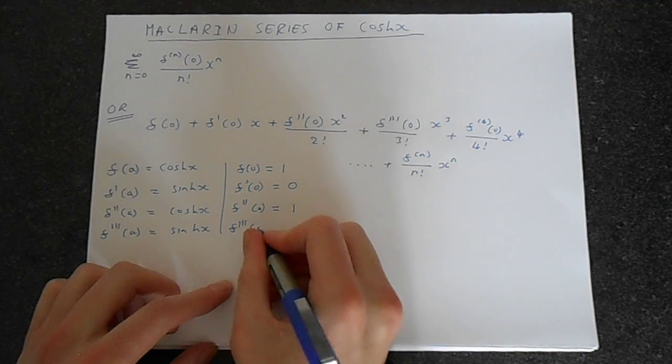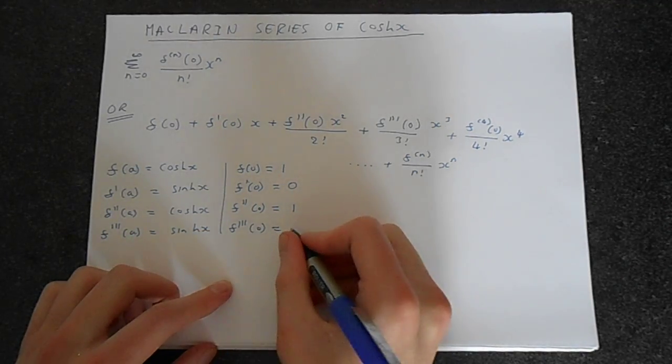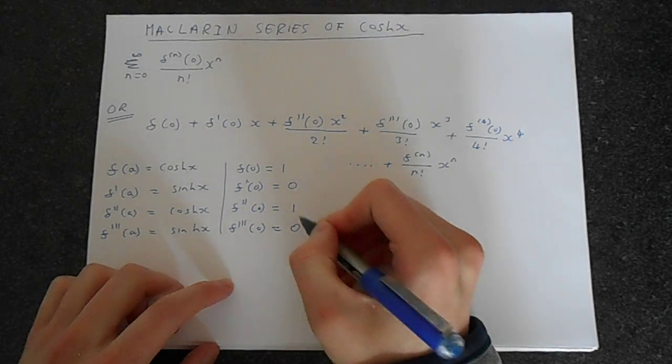And then the third derivative, this is back to sinh, hyperbolic sine, and that's going to be 0. So you notice the pattern: 1, 0, 1, 0.